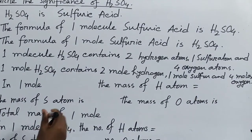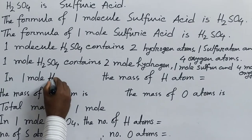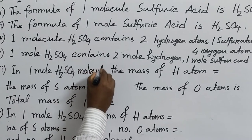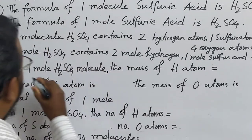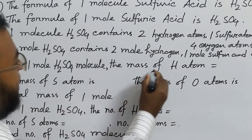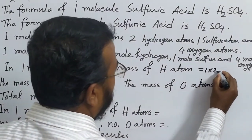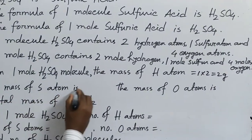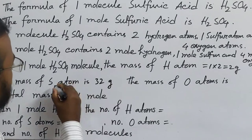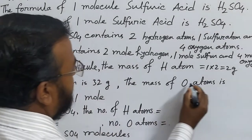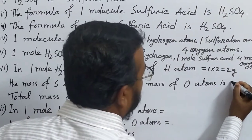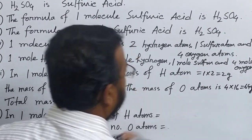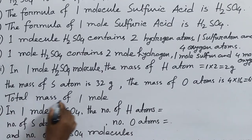In one mole of H2SO4, the mass of hydrogen is 1 × 2 = 2 grams. The mass of sulfur atom is 1 × 32 = 32 grams. The mass of oxygen atoms is 4 × 16 = 64 grams.